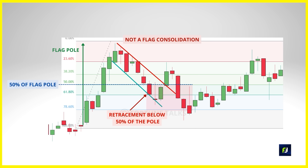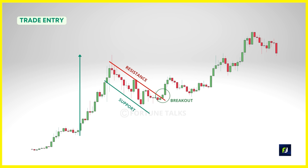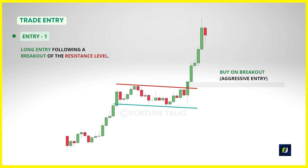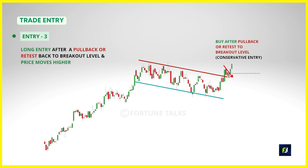Now that we've learned to identify a bull flag, let's discuss how to trade it — entry, stop loss, and targets. Since it's a bullish continuation pattern, we're only interested in a break above the resistance line. You can take a long entry when the price breaks above the resistance trend line, or buy above the high of the breakout candle after it closes. The second method is to wait for a pullback or retest back to the breakout level, then take a long entry when the price moves above the breakout candle high.